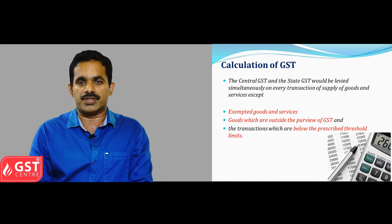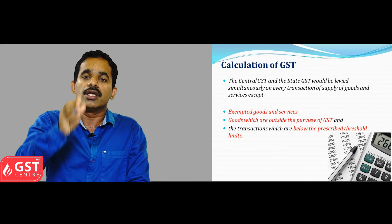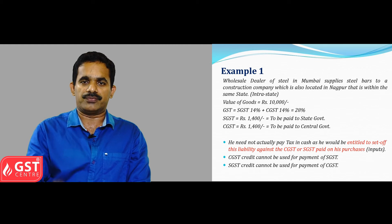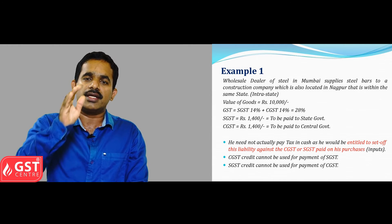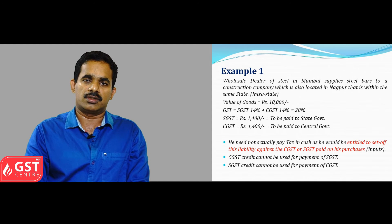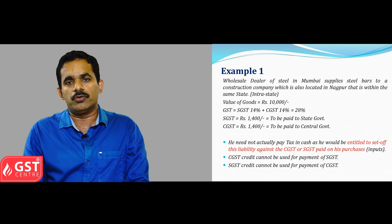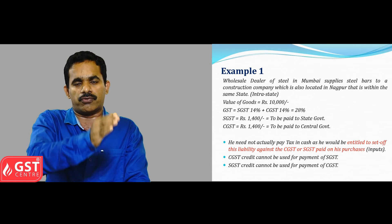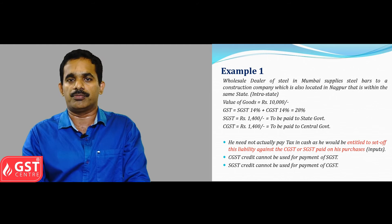There are some exempted goods or services — that is, those outside the purview of GST, specifically exempted from GST, or if the goods or services provided are below the threshold limit. Let us take one example: a dealer in Mumbai supplies steel bars to a person in Nagpur. In such a case, he can charge GST with two components — SGST and CGST — both at 14%, so the total rate will be 28%. If the supply value is 10,000 rupees, 28% tax is charged — so 1,400 will go to SGST (paid to the state government) and another 1,400 (14% CGST) will go to the central government.